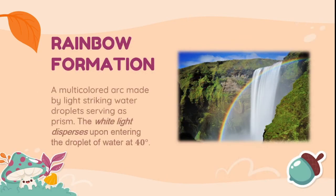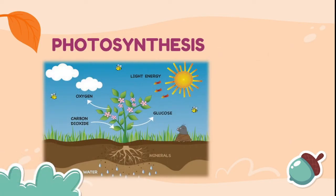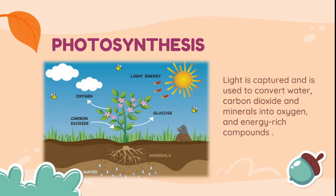The rainbow forms by the process of light striking water droplets, which serve as prisms. The white light disperses upon entering the droplet of water at 40 degrees. Photosynthesis is the process by which plants make their food. In this process, light is captured and used to convert water, carbon dioxide, and minerals into oxygen and energy-rich compounds.